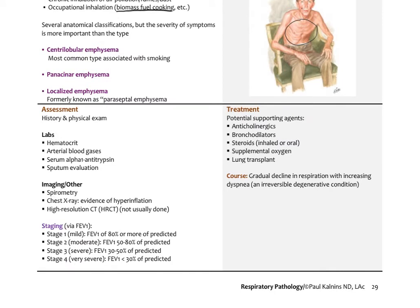Assessment involves history and physical exam, CBC to check the hematocrit and see if red cell count is increased, and arterial blood gas measurements from the radial artery to check oxygen and CO2 concentrations. Pulse oximetry is routine. Serum alpha-1 antitrypsin levels can be measured via blood test to check for genetic deficiency, and sputum evaluation may be performed. Spirometry helps in diagnosis, chest X-rays show evidence of hyperinflation, and high-resolution CT gives a clearer picture. Staging based on FEV1 can be stage one through four, indicating severity.